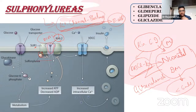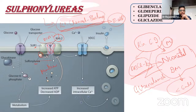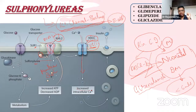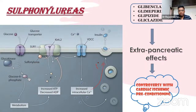When sulfonylureas bind to SUR1 on beta cells, they close the potassium channel, causing intracellular potassium to accumulate and membrane depolarization to occur. This stimulates voltage-gated calcium channels, causing calcium influx and increased intracellular calcium, which via protein-mediated mechanisms causes exocytosis of insulin granules.